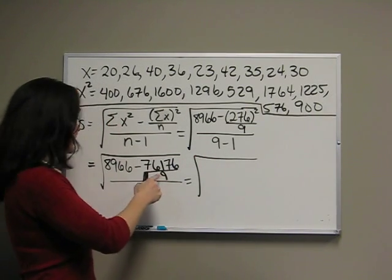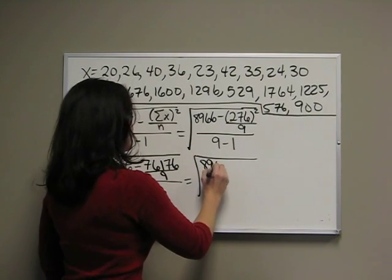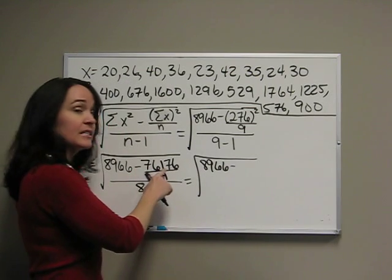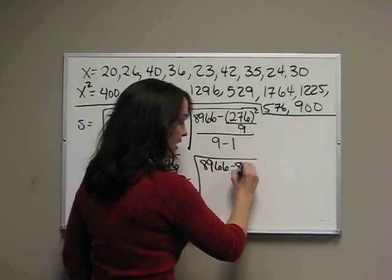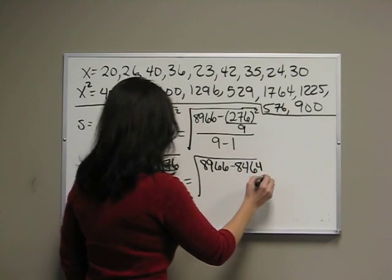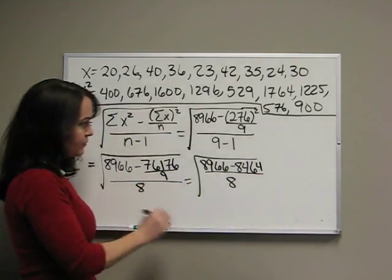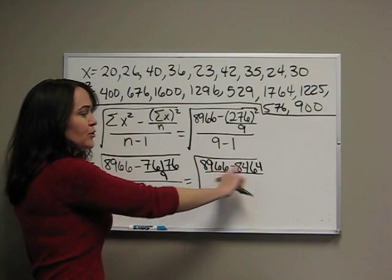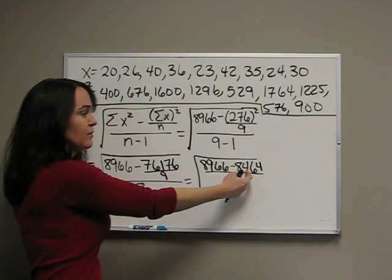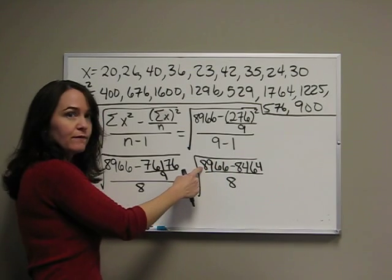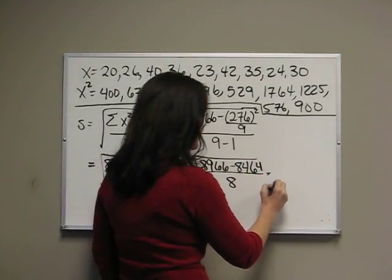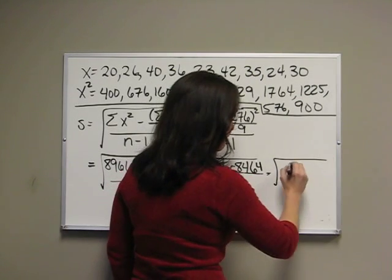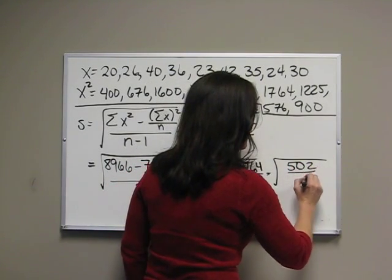Now, we're ready to divide. 76,176 divided by 9 is 8,464 divided by 8. Now, you should always get a positive number. So, if this number is bigger than your first number, then you've probably done something wrong. Subtract, and we get 502 divided by 8.